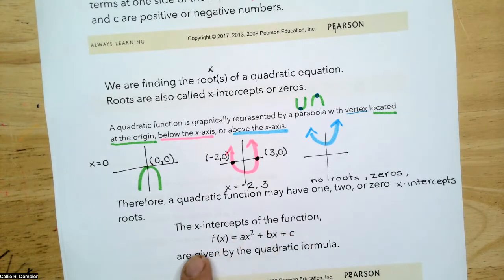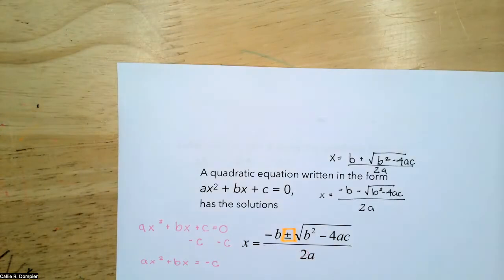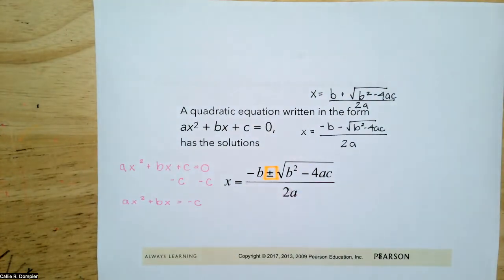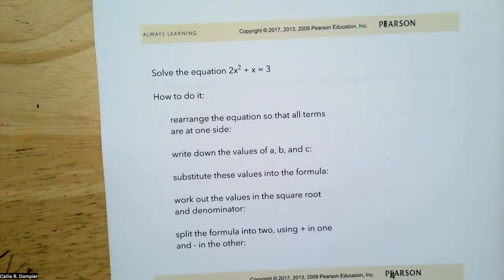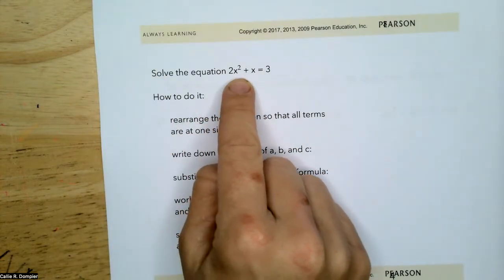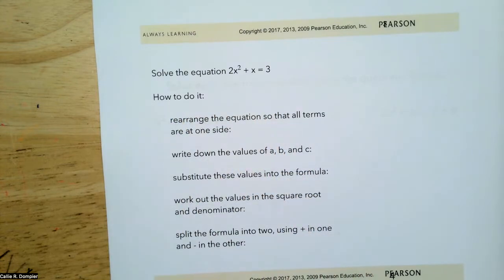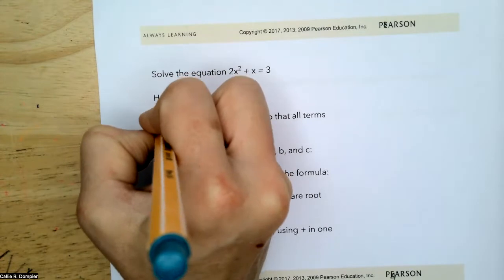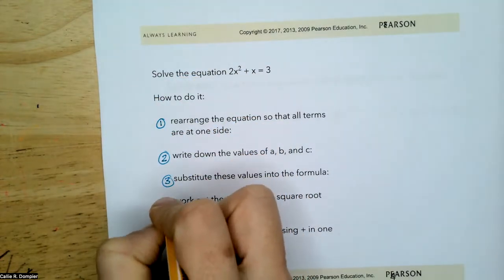The x-intercepts are given by the quadratic formula applied to ax squared plus bx plus c. Let's solve one together. Solve 2x squared plus x equals 3. Step one: rearrange so all terms are on one side. Subtract 3 from both sides to get 2x squared plus x minus 3 equals zero — that's standard form.